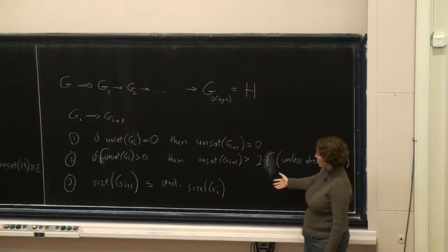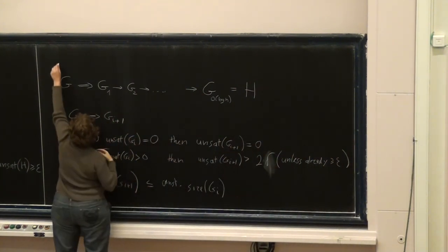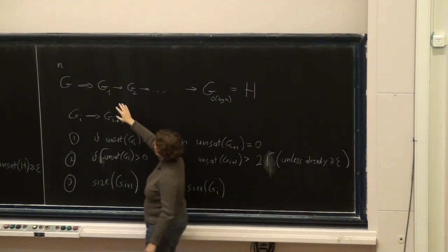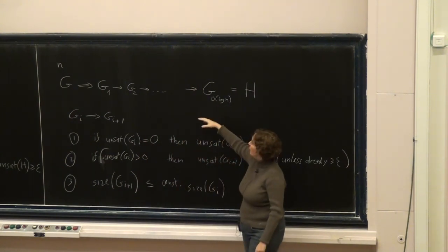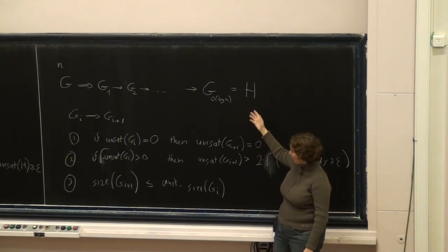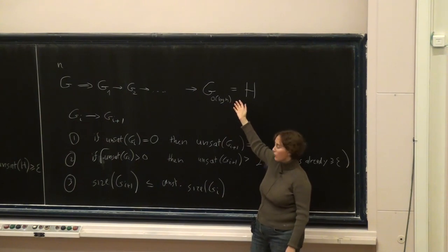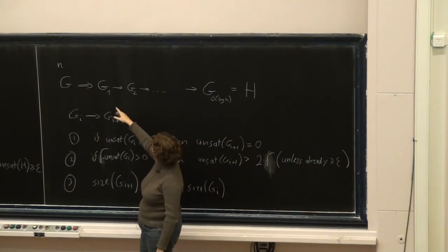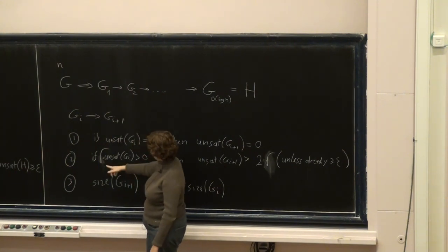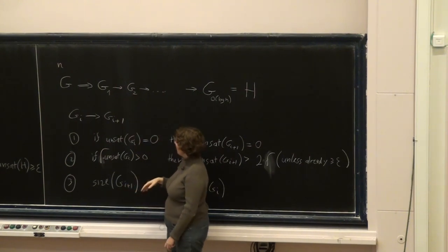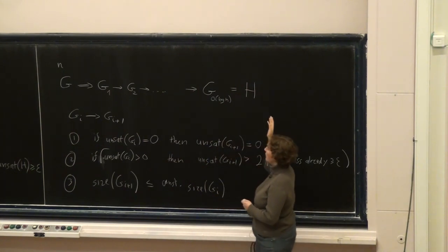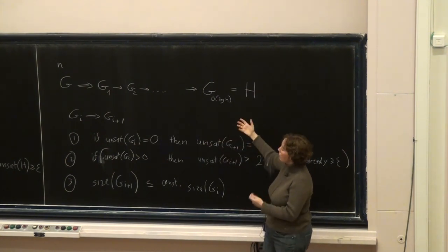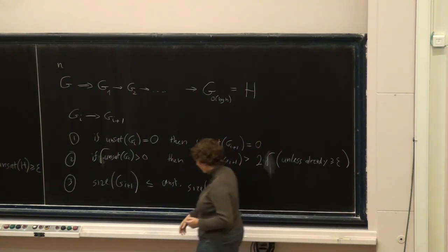This last part is important because we start with an instance of size N, and we apply this transformation, multiplying by a constant logarithmically many times. At the end, we multiply by a constant to the log N, which is just a polynomial factor. Anything bigger than a constant would result in a super-polynomial reduction. The reason I stress this is because by parallel repetition, it's straightforward to amplify some delta into 2 delta, but the problem is that the size of the instance squares. So instead, we do a form of de-randomized parallel repetition.